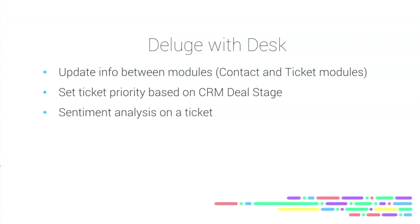So where does Deluge fit in? Say you have two different modules in Desk — one that's keeping track of all of your contact-related information and another module for tickets. Say you've added some custom fields to these modules because you're tracking a specific kind of information and someone goes into the ticket module and updates that field. There's no default way that those two fields are going to know they always need to be in sync with each other — the one module and the other module are not talking to each other through that field. So you can go in and write some Deluge code to say, when this field in the ticket module gets updated, go and update with the same value that other field in the contact module.